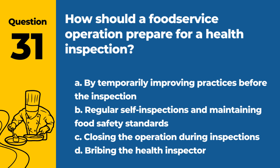Question 31. How should a food service operation prepare for a health inspection? A. By temporarily improving practices before the inspection. B. Regular self-inspections and maintaining food safety standards. C. Closing the operation during inspections. D. Bribing the health inspector. Answer: B. Preparation involves ongoing adherence to food safety standards and conducting self-inspections to identify and correct issues.